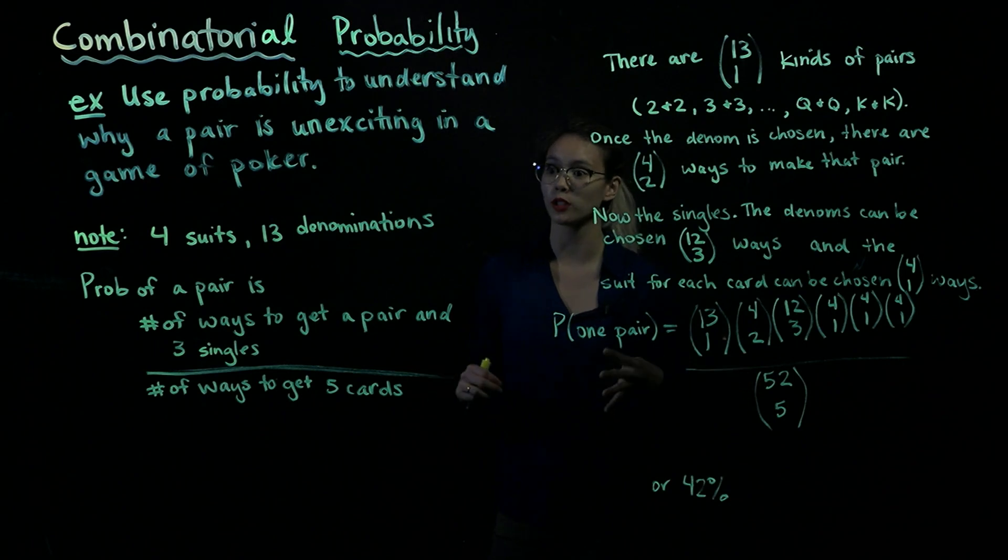Just in case you're not familiar with cards, we have four suits and 13 denominations: two, three, four, five, six, seven, eight, nine, ten, jack, queen, king, and ace.